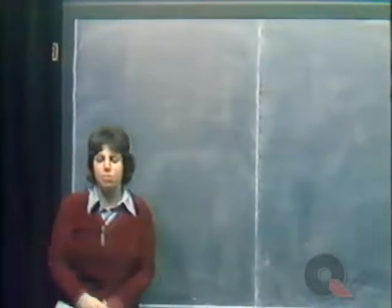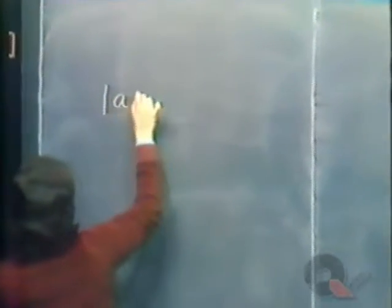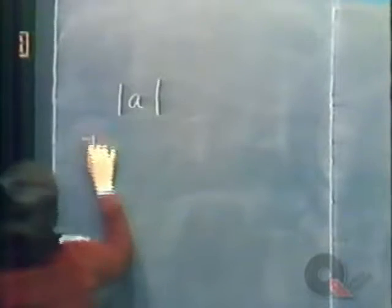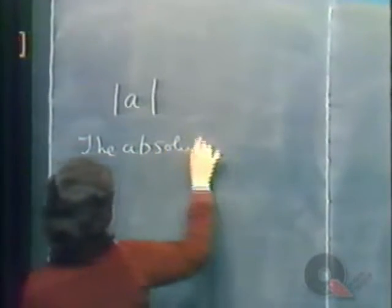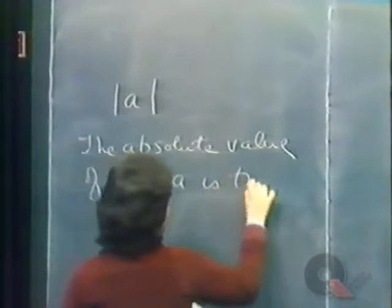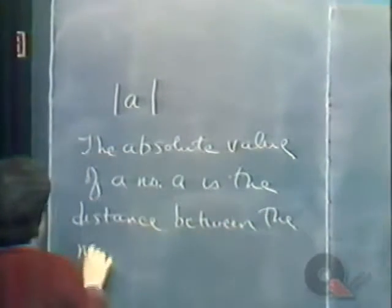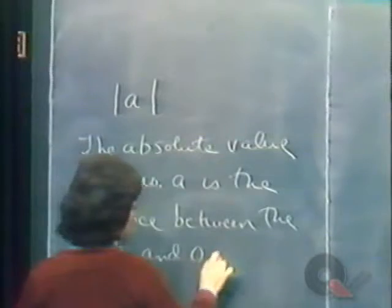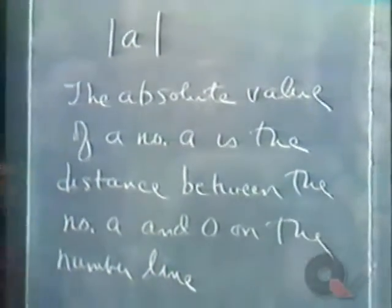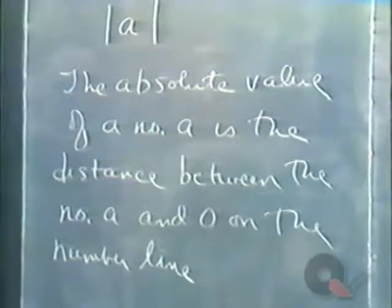In this video, we will learn how to solve absolute value equations. The absolute value of a number A, written with lines on either side of it, is the distance between the number A and 0 on the number line.